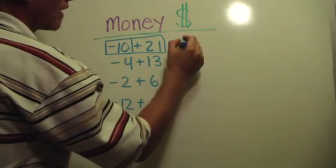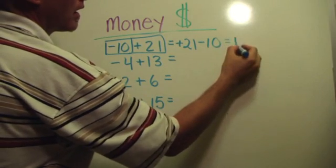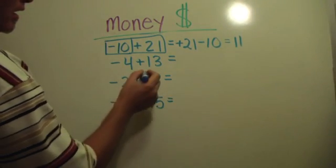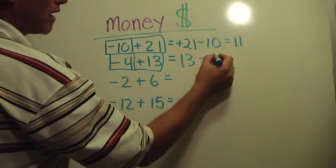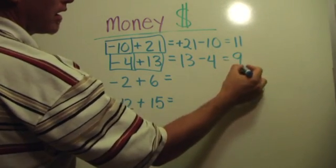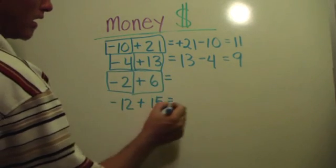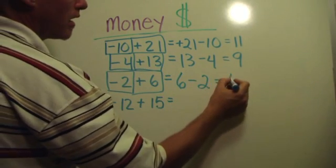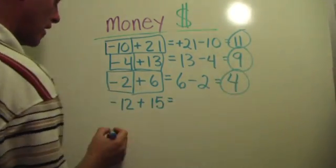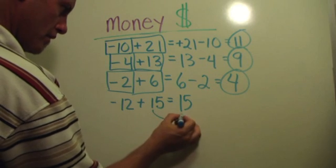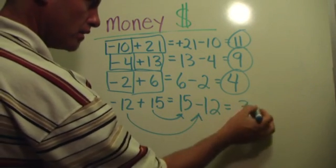Negative ten and twenty-one. Same thing as twenty-one and negative ten. Twenty-one minus ten is eleven. Very simple. Negative four and thirteen. Same thing as thirteen and negative four. Again, an easy problem. Negative two and six. Again, same thing as six and negative two. You'll have four. And the last one. Negative twelve and fifteen. Same question as fifteen and negative twelve. Which of course is three.